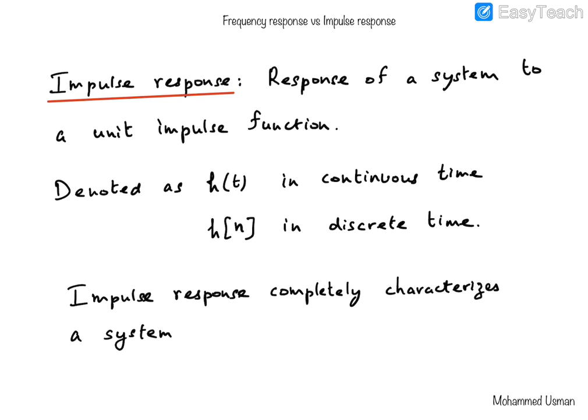Just as the impulse response allows us to understand and explore the system in the time domain. The impulse response of a system is basically the output of a system when the input is a unit impulse function — also called a delta function. The impulse response is usually denoted by small h, so h(t) is the impulse response of a continuous time system, and h[n] denotes the impulse response of a discrete time system.